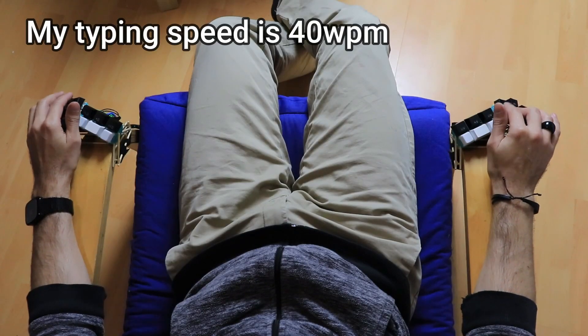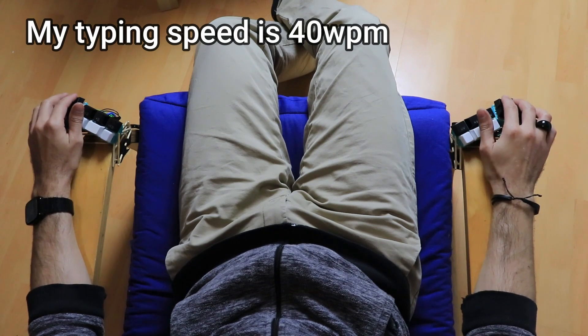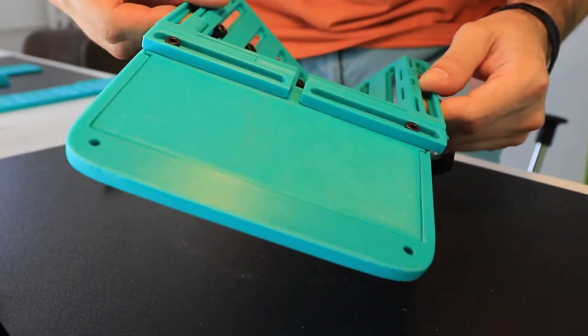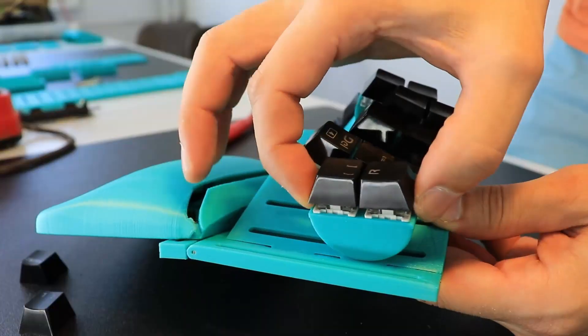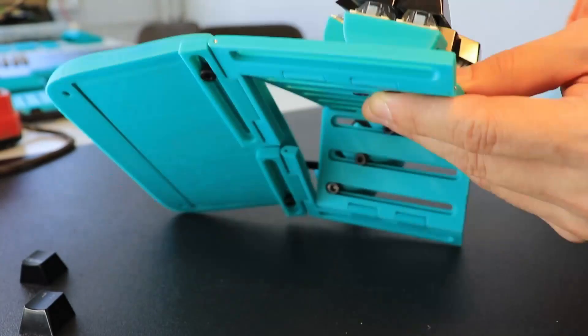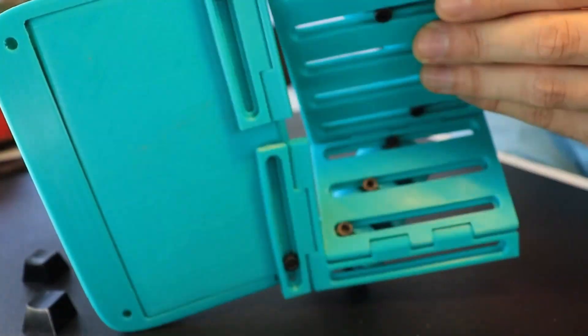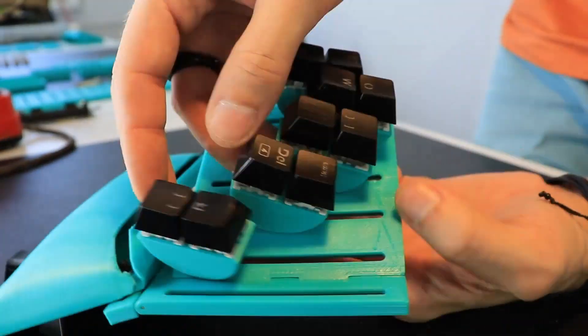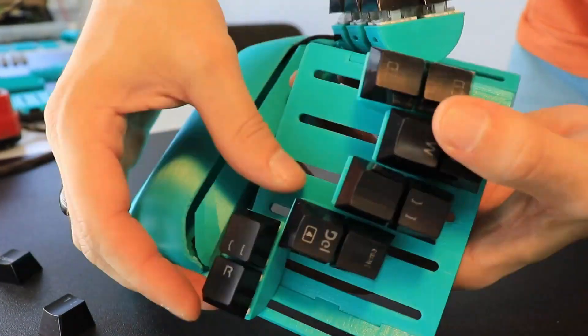It didn't do much for my typing speed though. To be honest, I haven't really practiced typing lately, but I feel very comfortable doing it. I can set up the best tenting angle for my wrists. I can slide each module back and forth depending on the length of each individual finger as well as tilt each module or rotate it based on the geometry of my hand.